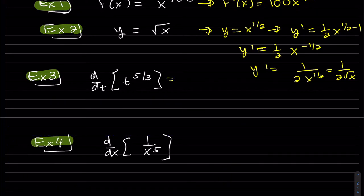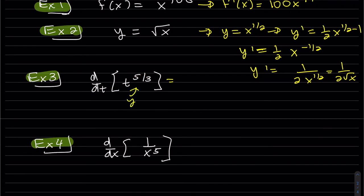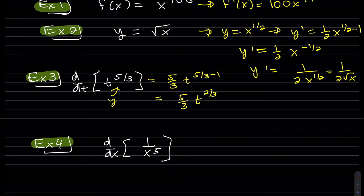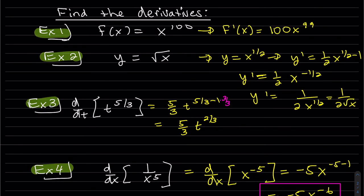This one we can just compute. That's saying, remember the notation, the derivative of t to the 5 thirds with respect to t. It's like dy dt. This is my y. So it's just 5 thirds. That's minus 3 over 3, 2 thirds. This one, we might want to write it as a negative exponent so we can follow the power rule. Negative 5 in the front. Okay, so again, I did this on purpose to look at all the different notations of asking for the derivative.